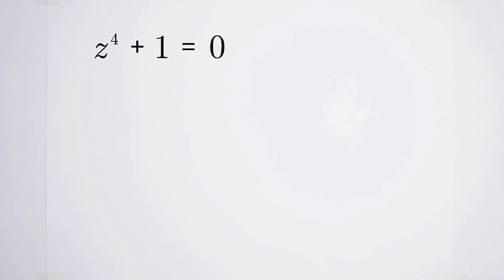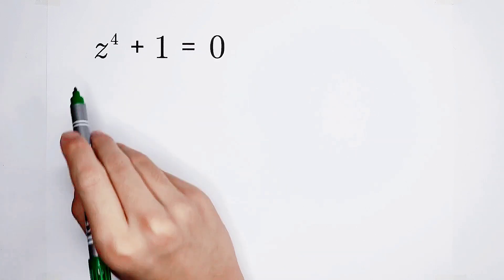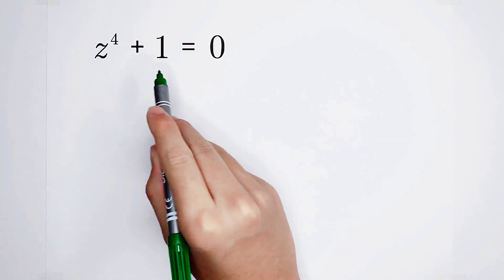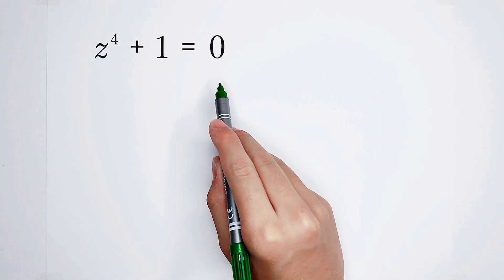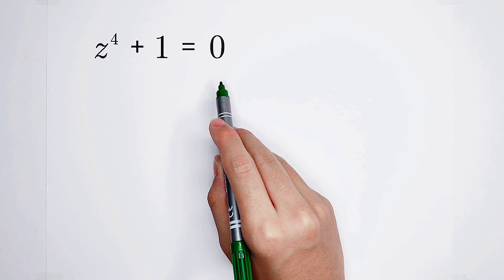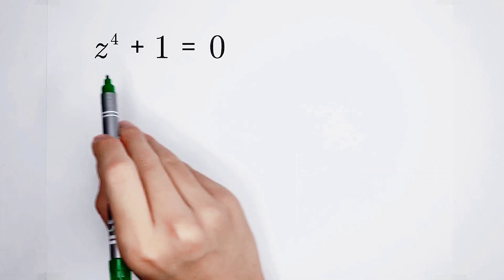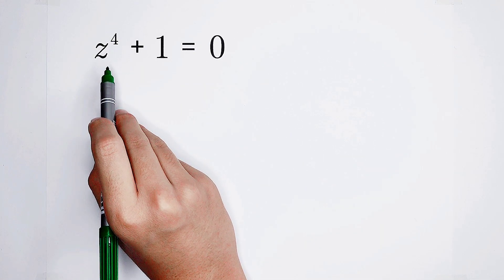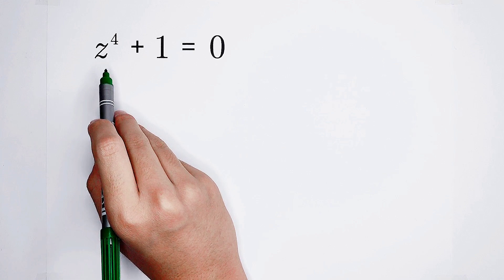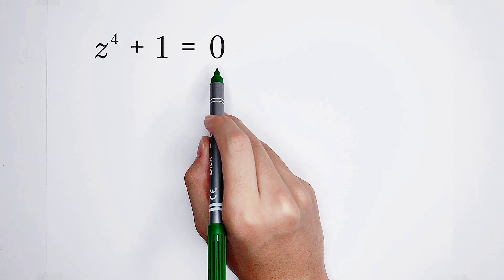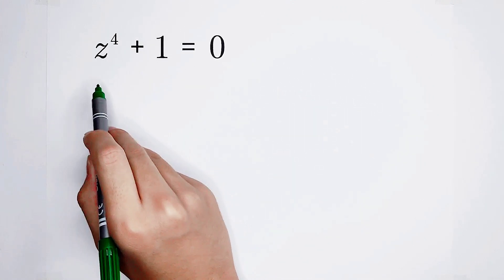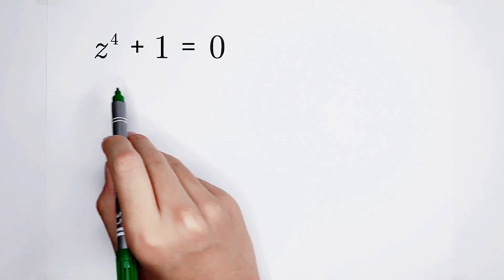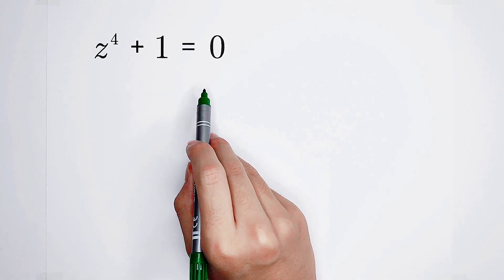Find all the solutions of this equation: z to the power 4 plus 1 equals 0. High exponent! We hate it. And if you subtract 1 from both sides, you can get z to the power 4 equals negative 1.